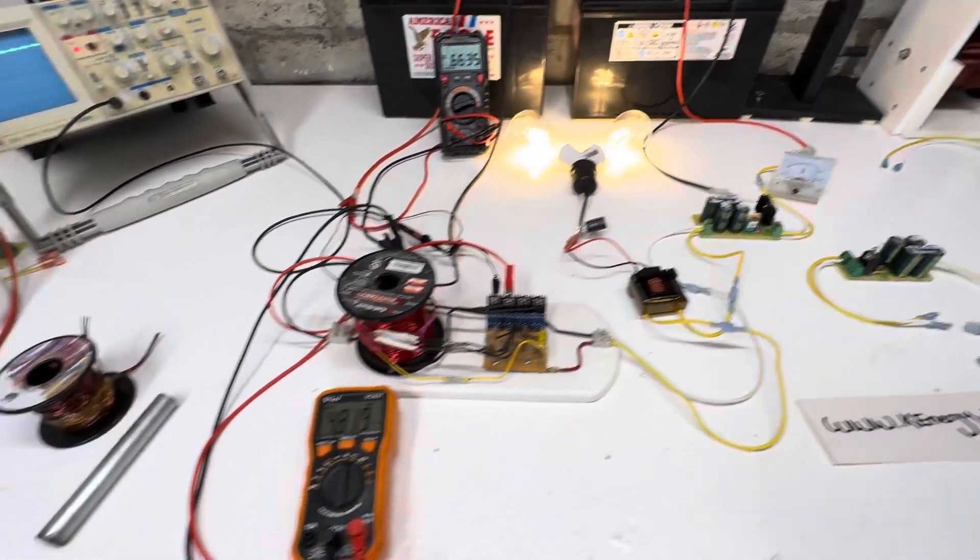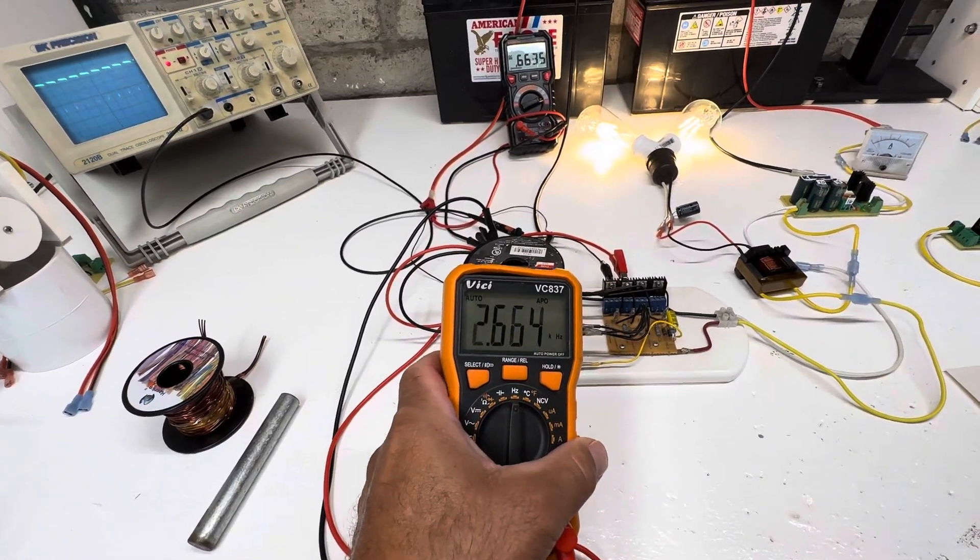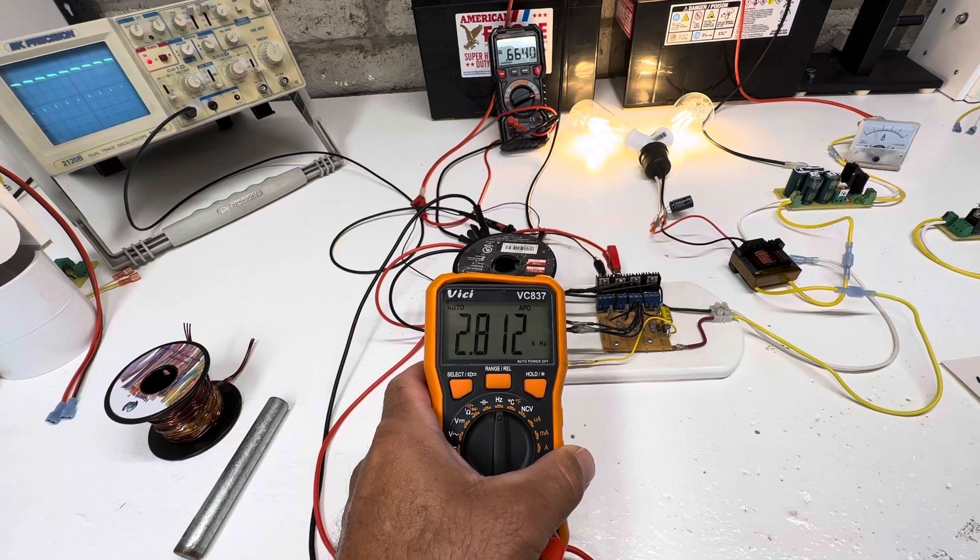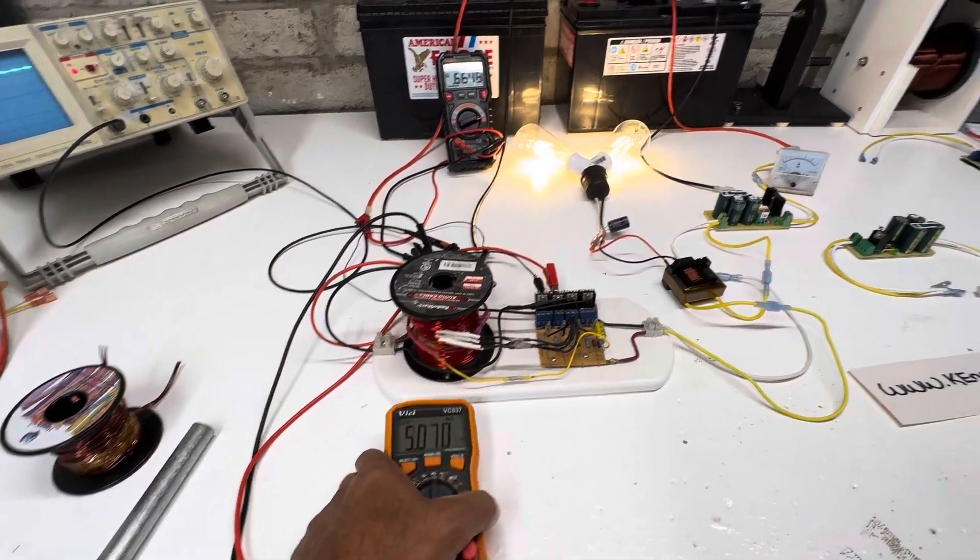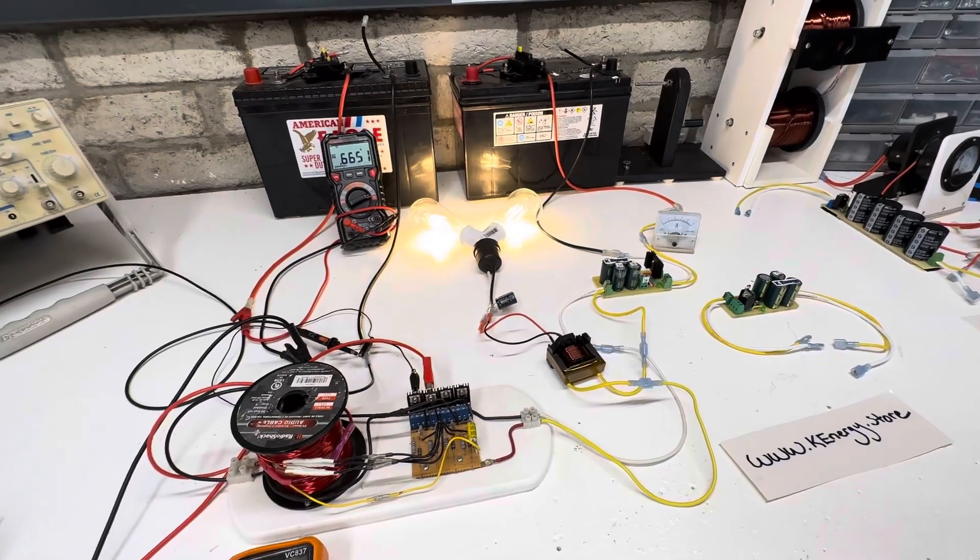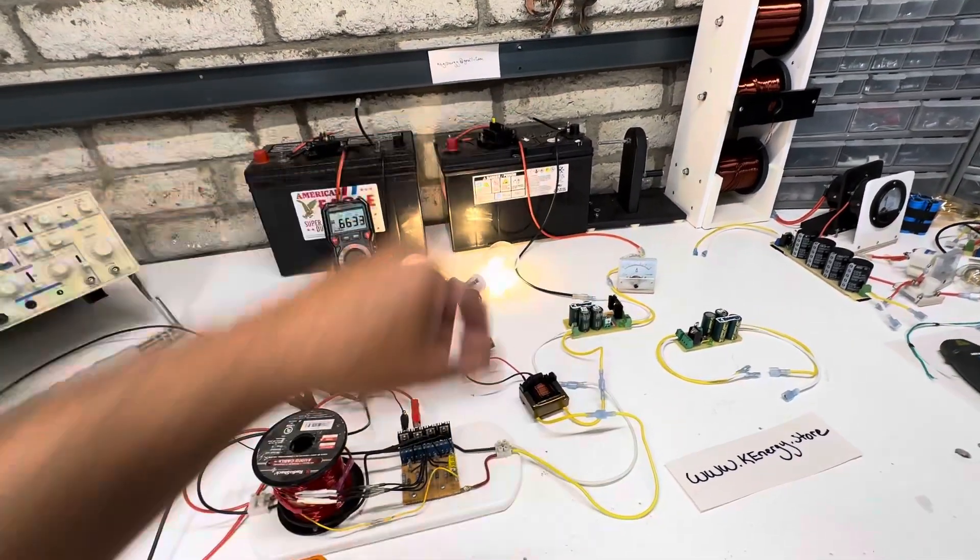So, pretty neat little experiment. It's interesting to see how it actually ramps up to charge that capacitor. A really simple, effective circuit for this kind of use. So we got the light output and we got the cap dump charging the second battery.